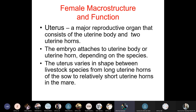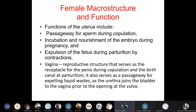The uterus is a major reproductive organ consisting of a uterine body and two uterine horns. The embryo attaches to the uterine body or horn depending on the species. The uterus varies in shape between livestock species, from long uterine horns in the sow to relatively short horns in the ewe. Functions include serving as a passageway for sperm during copulation, incubating and nourishing the embryo during pregnancy, and expulsion during parturition. The vagina serves as the receptacle for the penis during copulation and as the birth canal during parturition.